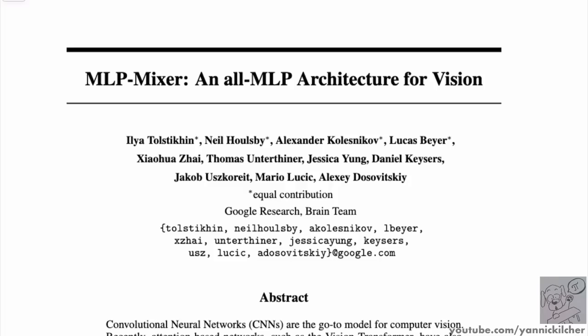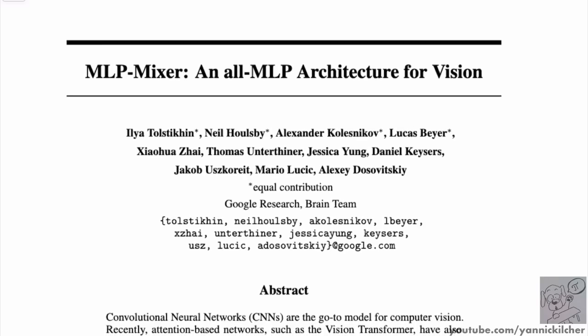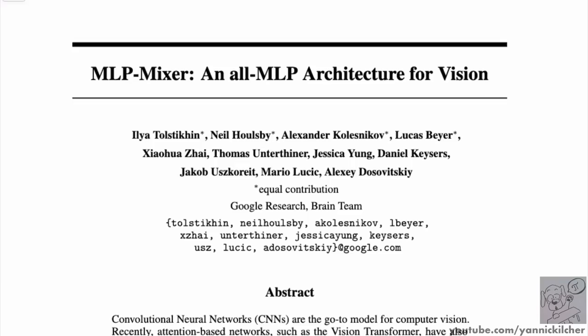This paper presents a neural network that is just MLP, just feed-forward multi-layer perceptrons, no convolutions, no attention mechanism. It's just matrix multiplications, non-linearities, normalization, and skip connections. So it appears we've come full circle in computer vision going from MLPs originally to convolutional neural networks, some pixel RNNs, then vision transformers. And now we've come back to MLPs. Turns out the thing you've tried at the very beginning works after all.